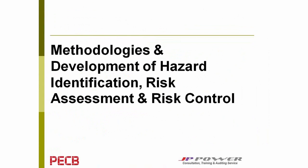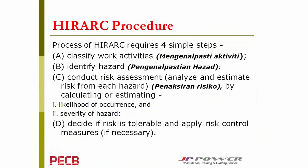Basically, there are four simple steps to begin. We start by classifying the types of work activities in the organization — listing and identifying what activities they have — followed by identification of the hazards, followed by risk assessment, and finally deciding the necessity to control the risk. The following slides will give a much more detailed explanation of how these four steps are carried out.